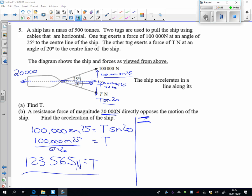So all together, how far to the right are we being pulled? We've got the 100,000 cos 25 from the first bit there. We've also got the T cos 20 bit there. So that's the 123,565 cos 20 there. But we've got the 20,000 resisting its movement. So that is the grand total of the resultant force going to the right. Let's tap that in and work that out.